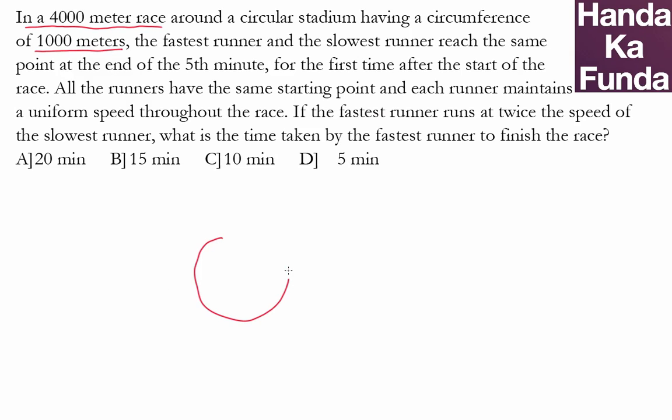So let's say that this is my circular stadium, which has a circumference or a length of 1000 meters. The race is of 4000 meters. So that means a runner needs to make four laps to reach the finish line.